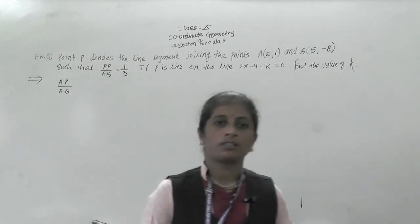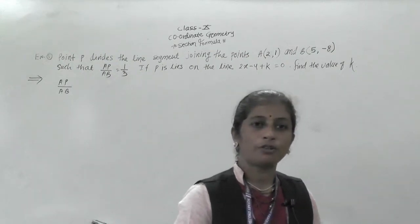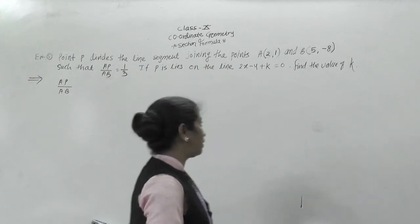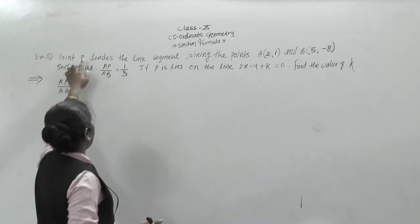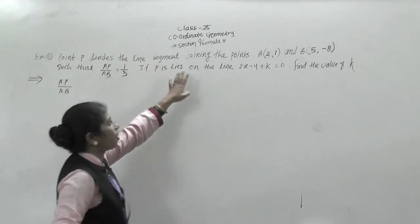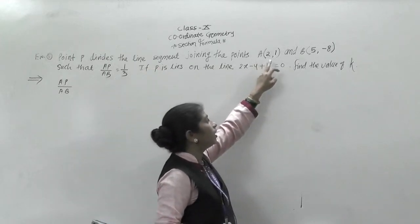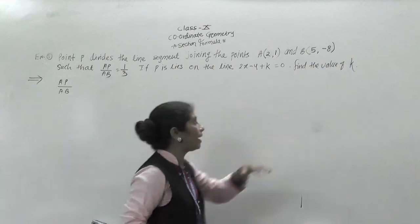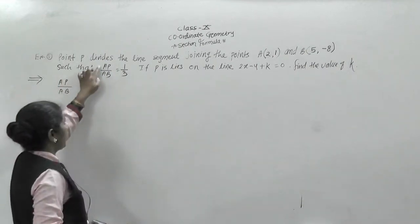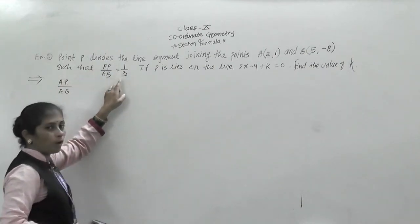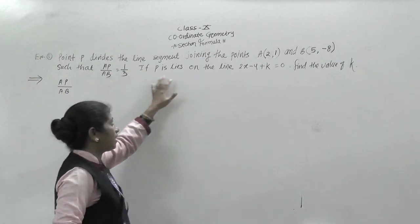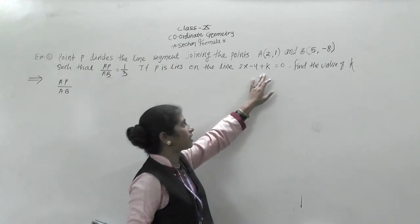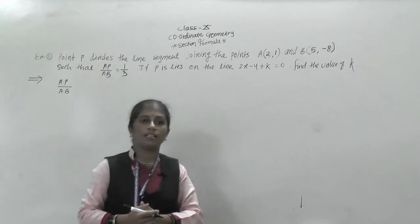Good morning students, today we are going to see the examples on the section formula. Here is one example: point P divides the line segment joining the points A (2, 1) and B (5, -8), such that AP by AB equals 1 by 3. If P lies on the line 2X minus Y plus K equals 0, find the value of K.